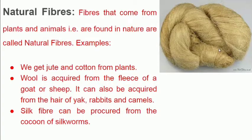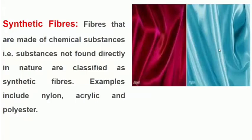Natural fibers are those that come from plants and animals found in nature. For example: cotton — we get from the cotton plant; jute — from the jute plant; wool — from the fleece of goats or sheep; silk — from silkworms. One more is coir, which comes from the outer husk of coconut.